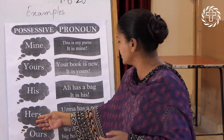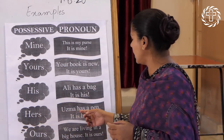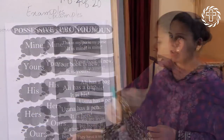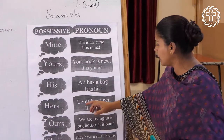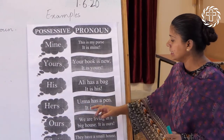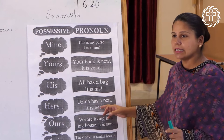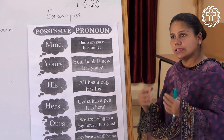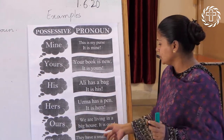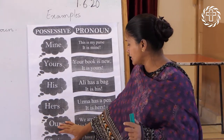Hers: Uzma has a pen. It is hers. For example — Uzma has a pen. It is hers. Ye uska hai.